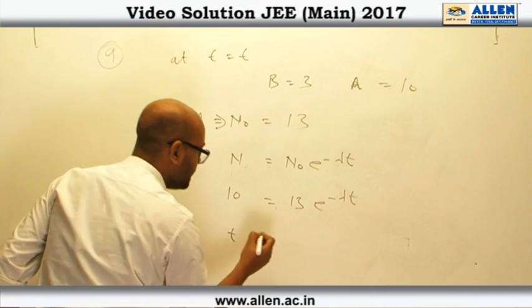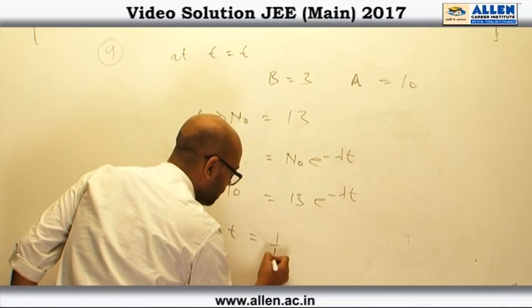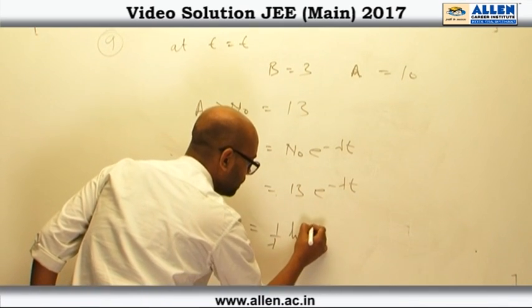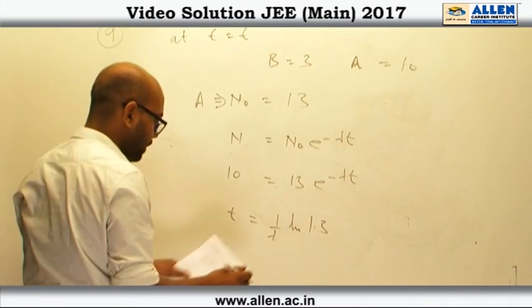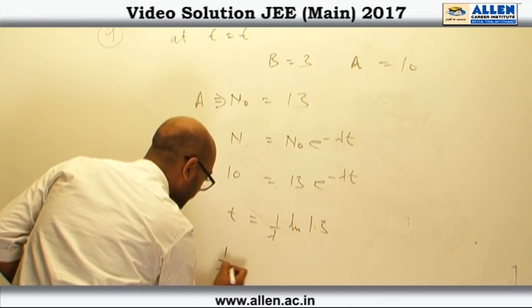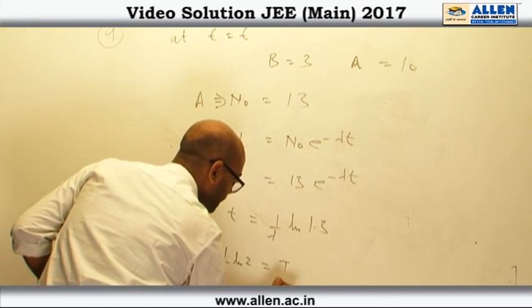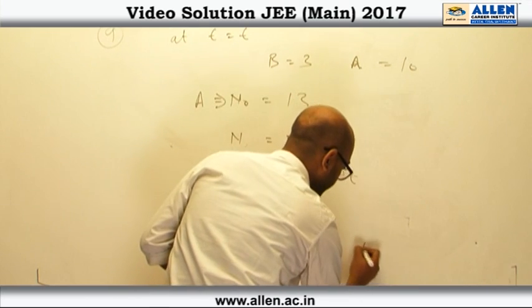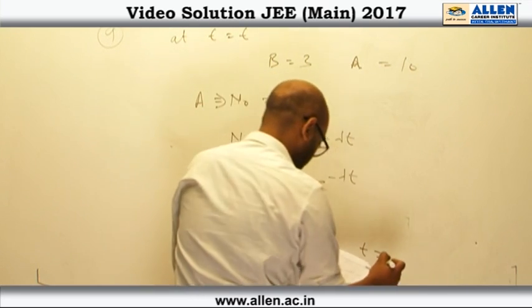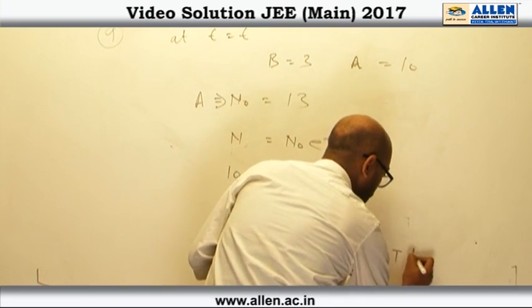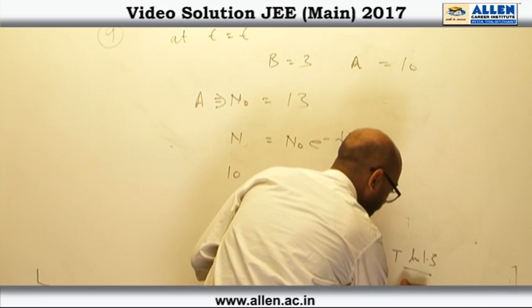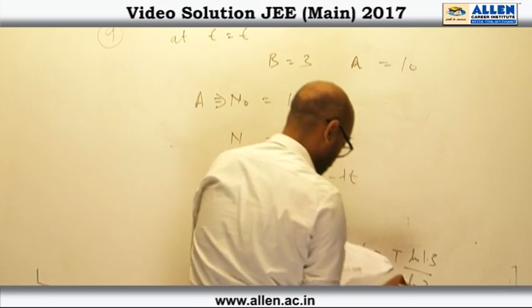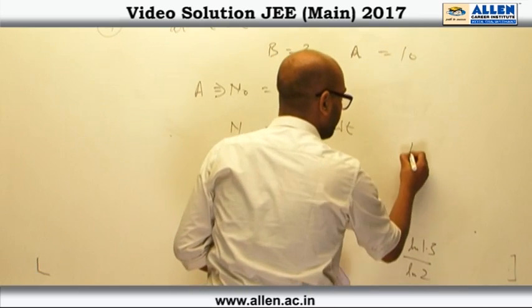Then we can get the value of t is equal to 1 by lambda ln 1.3. And we know lambda is 1 by lambda ln 2 is t half. So by this we get t is equal to t half log 1.3 upon log 2. So answer of this question is 4.